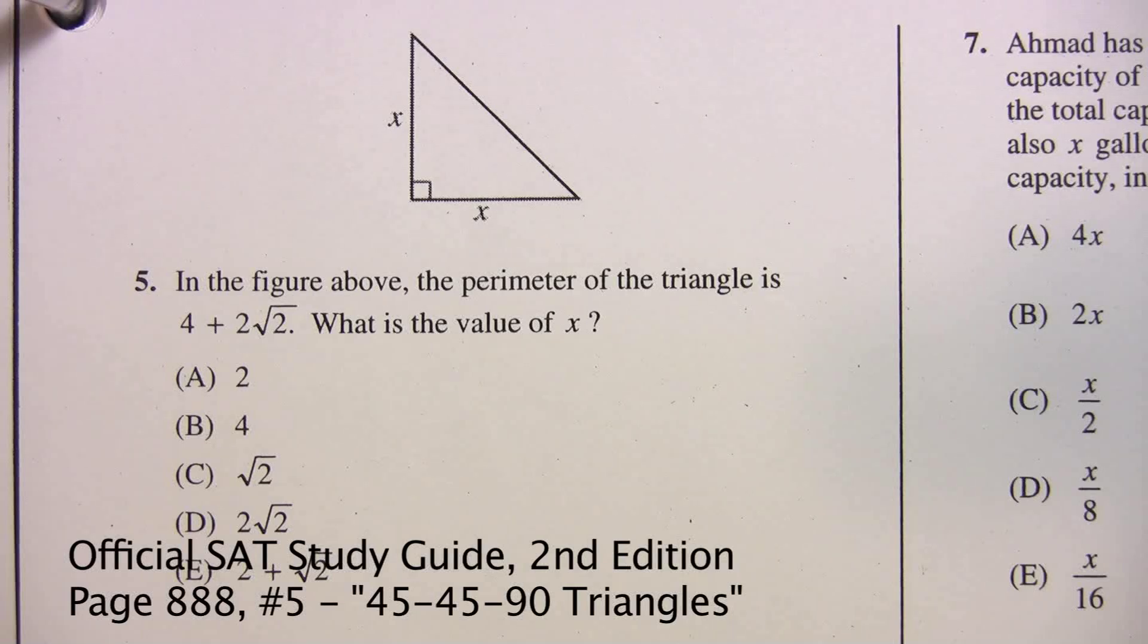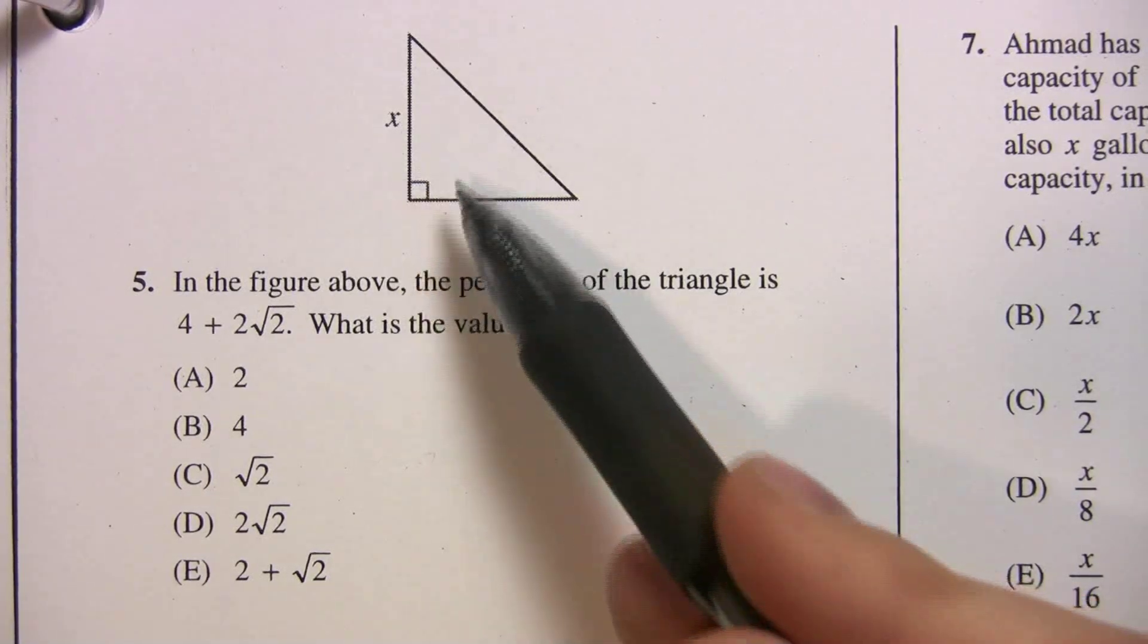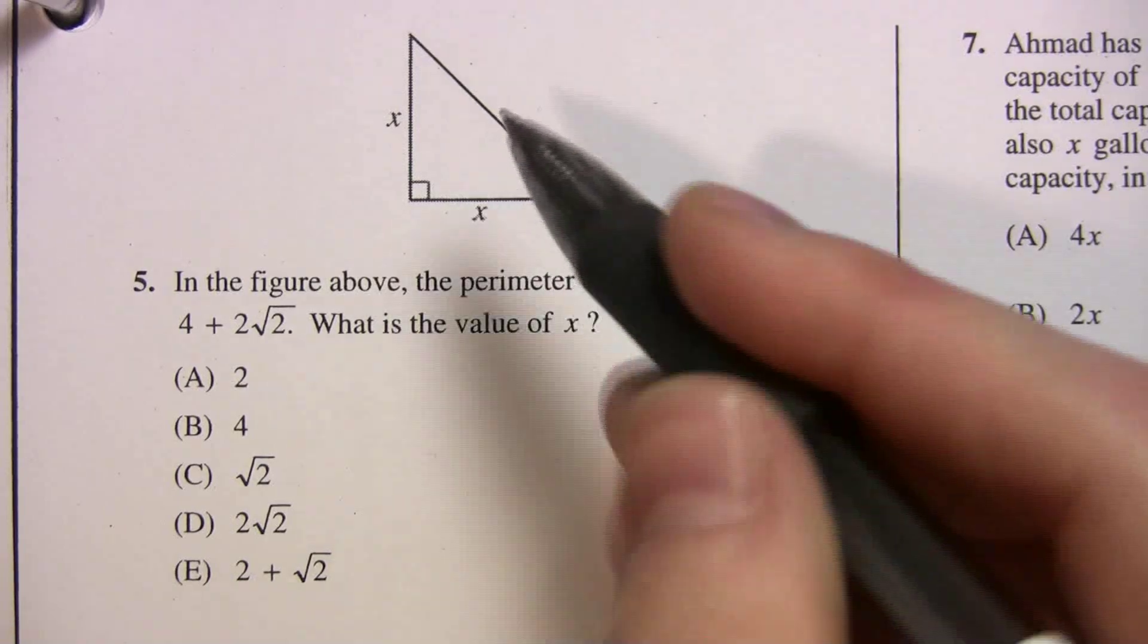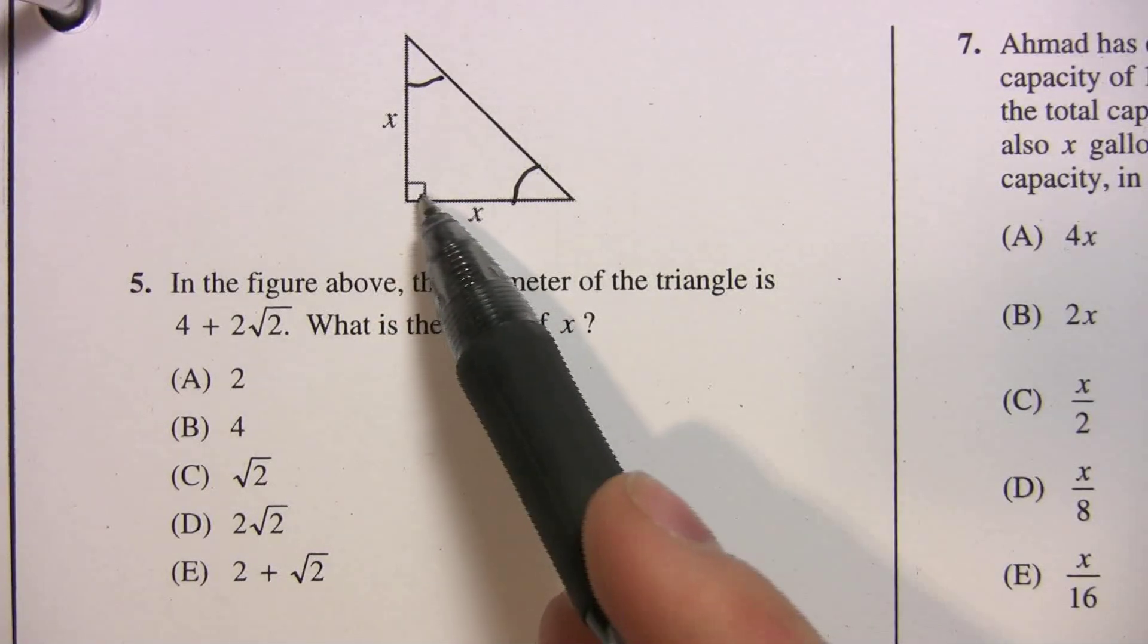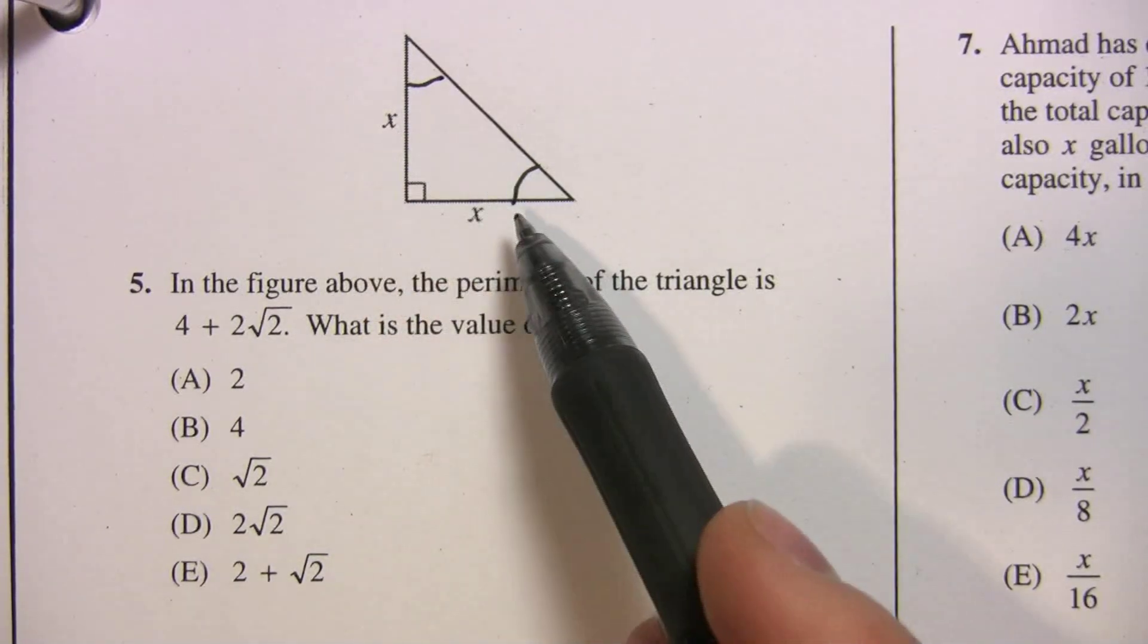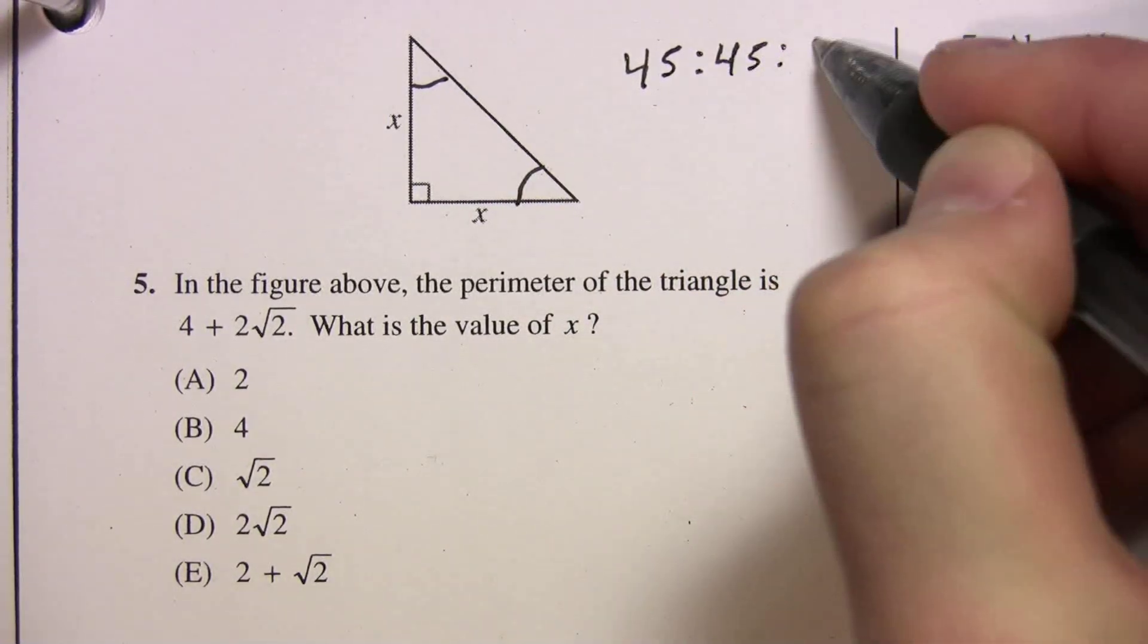Alright, so we're on page 888. This is number 5. It's a triangle question. In the figure above, the perimeter of the triangle is 4 plus 2 radical 2. What is the value of x? So before we go using Pythagorean theorem and doing anything like that, let me ask you, what type of triangle is this? So how do you know what type this is? Well, two sides are equal. If that's equal to that side, this angle is equal to that angle. So anytime you have 90 degrees and two sides are equal, or two angles are equal by default, it's a 45, 45, 90.